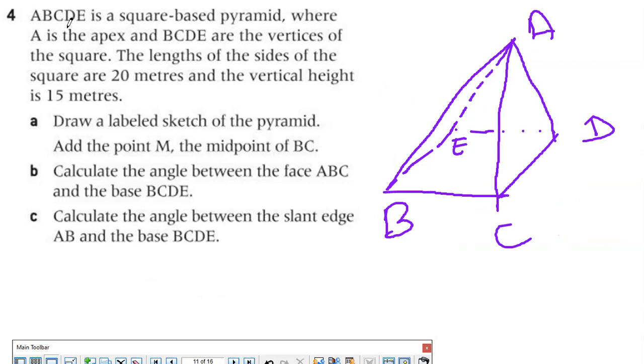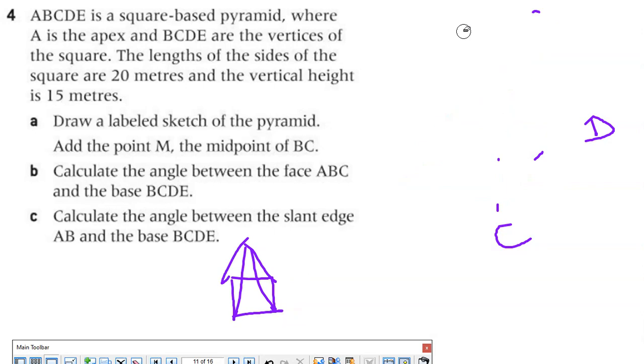ABCDE is a square based pyramid. When I say pyramid, it means I have a base - it could be any quadrilateral, but it's a square. We don't draw in 3D like a square and then pyramid like this. We draw it as a parallelogram. Let me show you how to draw it.